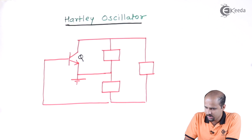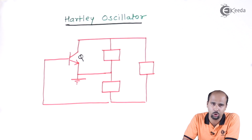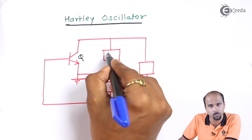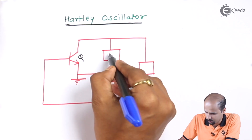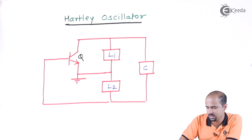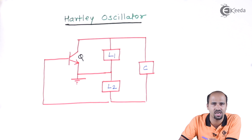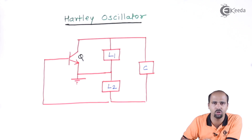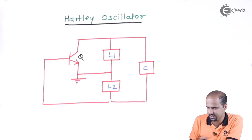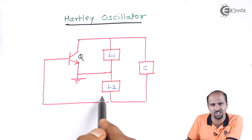Here we have to analyze the circuit. This is the general circuit and we have to determine what components go where. The components are L1, L2, and capacitor C. In Colpitts oscillator we discussed two capacitors and one inductor; here we have two inductors and one capacitor. H for Hartley, H for Henry — the unit of the inductor — so this resembles maximum inductors: two inductors and one capacitor.